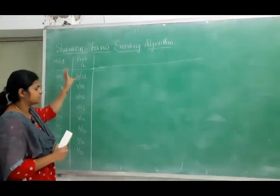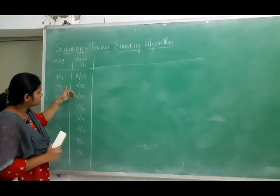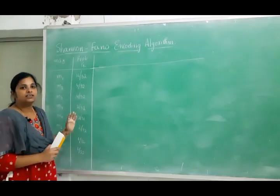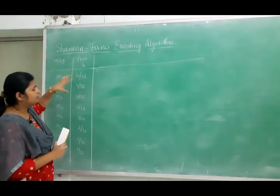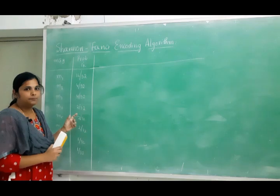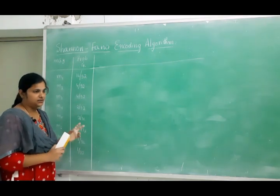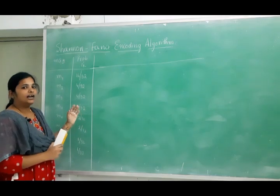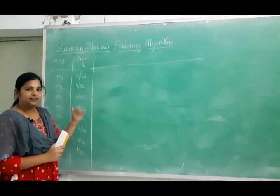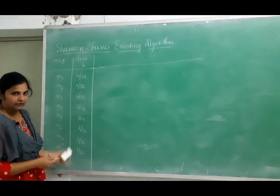Step one: place the given messages in descending order of probability. Step two: divide these probabilities into two halves — upper and lower — such that the sum of probabilities in the upper part equals the sum in the lower part. Step three: assign bit 0 to the upper part and bit 1 to the lower part. Step four: if two messages share the same bit, again assign 0 and 1, continuing until each message has a unique codeword.